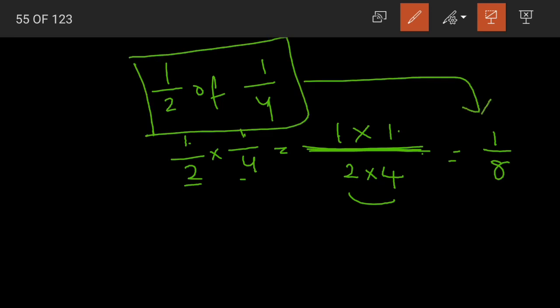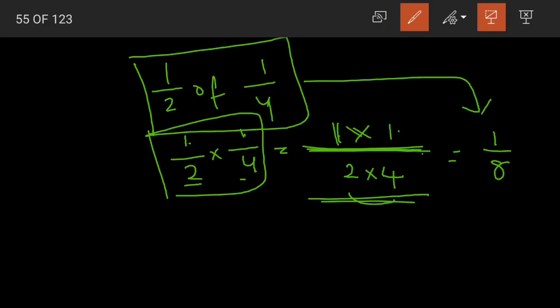How to multiply fractions? That Anil eating apple story was to understand the concept of multiplication. And this is how we actually multiply two fractions: multiply the numerators, divided by again multiply the denominators. So 1/2 of 1/4 will be equal to 1/8.